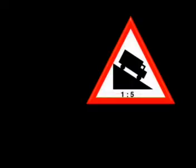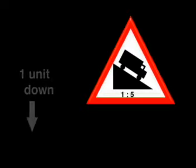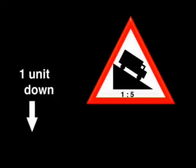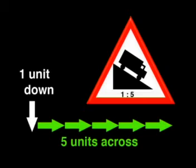That sign tells us how steep the road is. Then how steep is it? Well, let's have a look. The sign gave a ratio of one to five. It means that for every one meter we go down, we go five meters across.